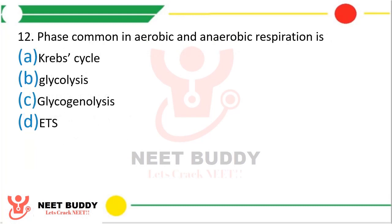Question 12: The phase common in aerobic and anaerobic respiration is — Krebs cycle, glycolysis, or glycogenolysis? Glycolysis occurs in both aerobic and anaerobic respiration.